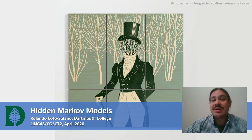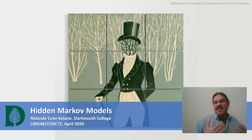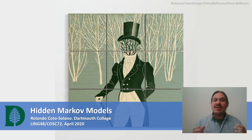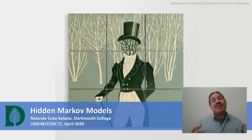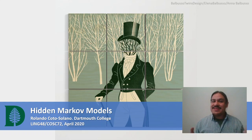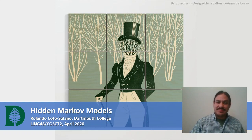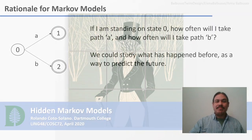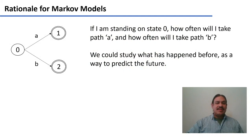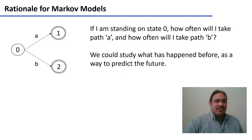In this video, we're going to talk about a very useful type of automaton: hidden Markov models. They're very common in many applications, particularly signal processing and speech recognition. You might have heard the term before, but what are these models?